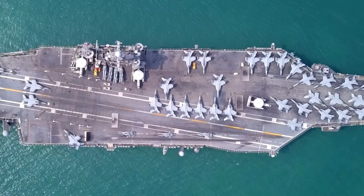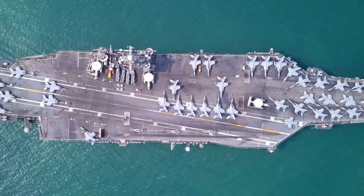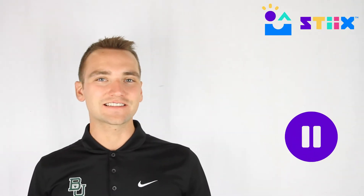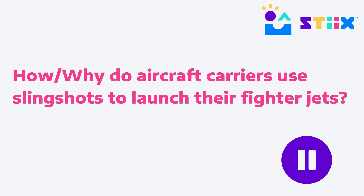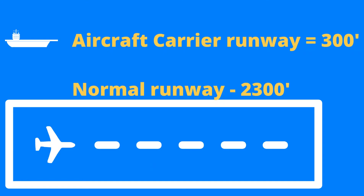For example, did you know that aircraft carriers use catapult technology to launch their fighter jets into the air for their missions? Can you quickly pause this video and ask yourself why they did that in the first place? Hopefully you concluded that a runway on a boat isn't nearly as long as a runway on land, so they rely on a slingshot to get that airplane up to speed for takeoff in a short amount of distance and time.